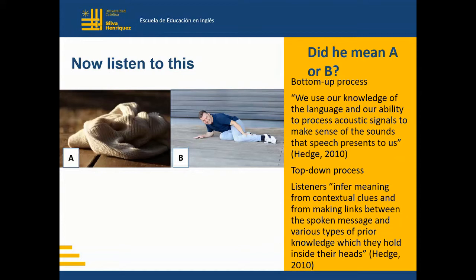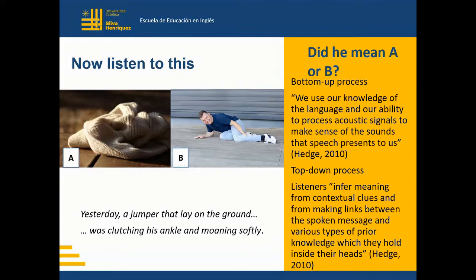Let's listen to the utterance one more time: 'Yesterday, a jumper that lay on the ground was clutching his ankle and moaning softly.' Up to the word 'ground,' both pictures A and B were perfect candidates to answer this puzzle. Thanks to our bottom-up process, we are able to recognize the sounds of the words and match them with the pictures. Lexicon was easily represented in our minds. At the same time, this first part of the sentence follows a clear tense structure we recognize as past simple, indicating it is part of a narrative text of a past event.